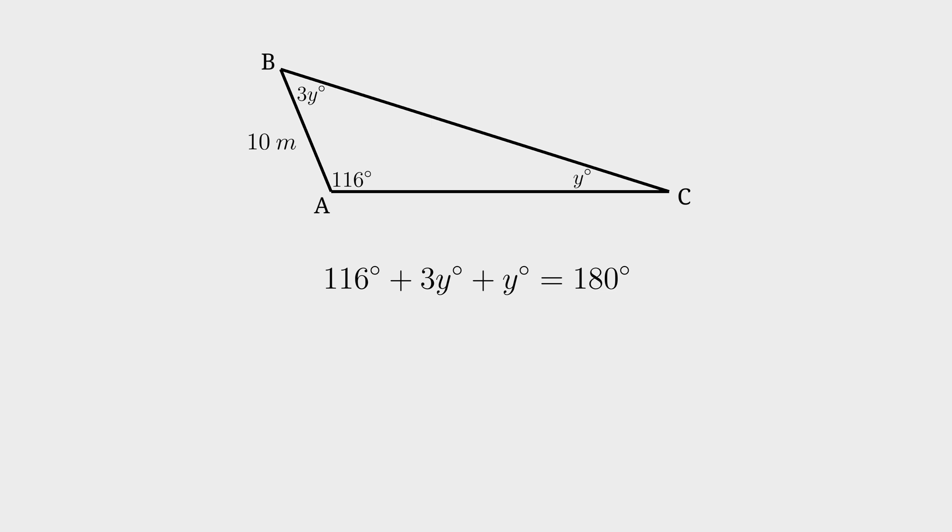We can add the Y's together to give us 4Y. Subtract 116 degrees from both sides and then you are left with 4Y is equal to 64 degrees. To isolate the Y, divide both sides by 4 and then you will have Y is equal to 16 degrees.